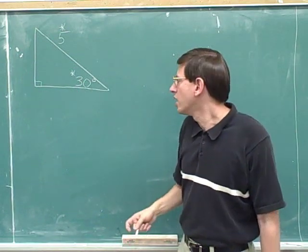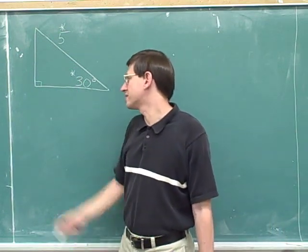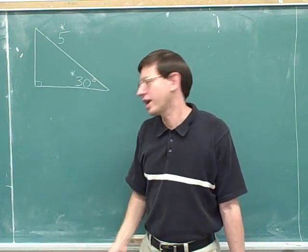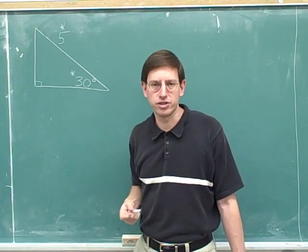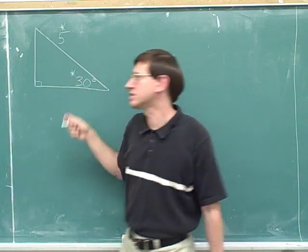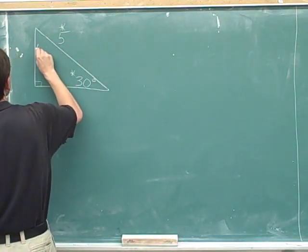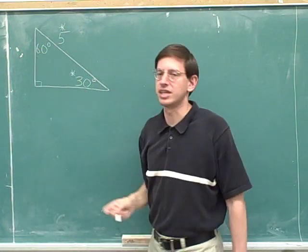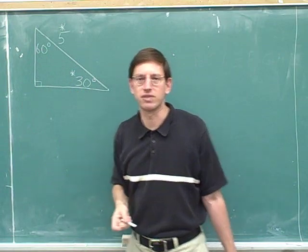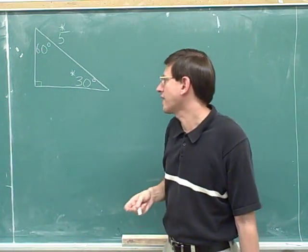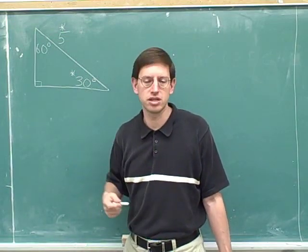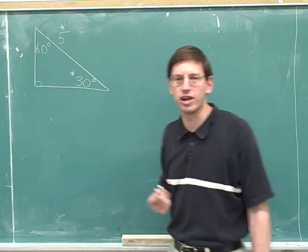Since one angle is 90 degrees, the remaining two angles have to add up to 90. So this angle must be 90 minus 30, which is 60 degrees. You can check: 60 plus 30 equals 90. In a right triangle, one angle is 90 and the other two also add up to 90, so the total sum of all angles is 180, as in any triangle.